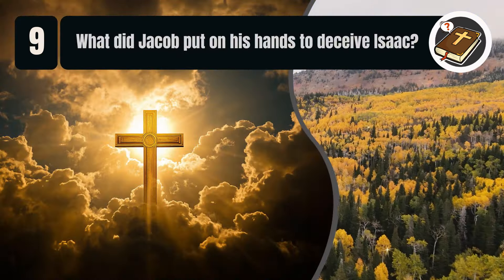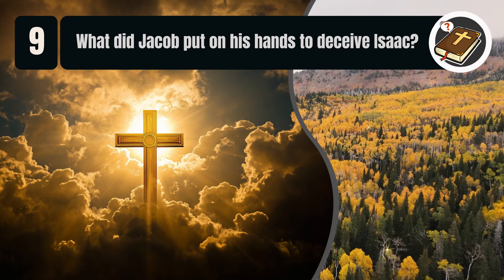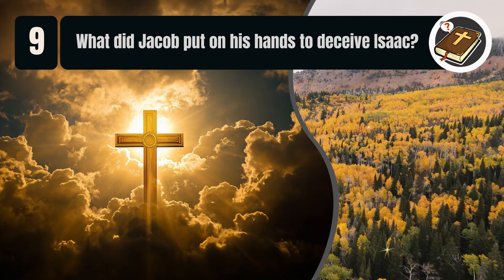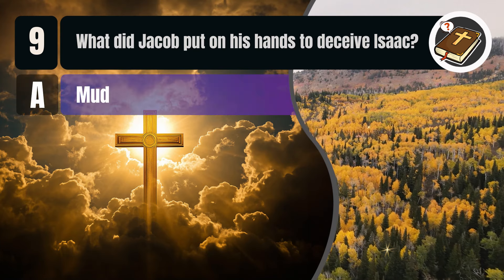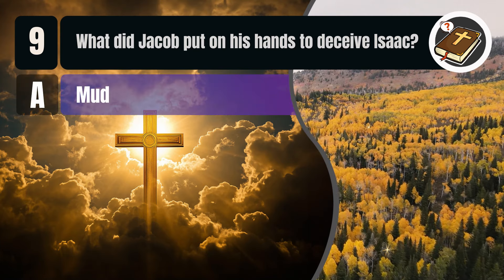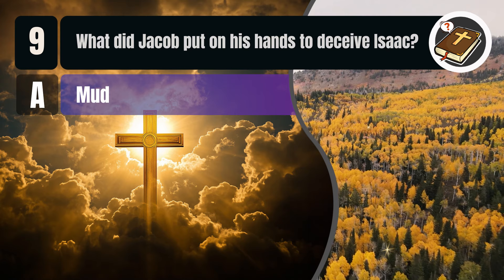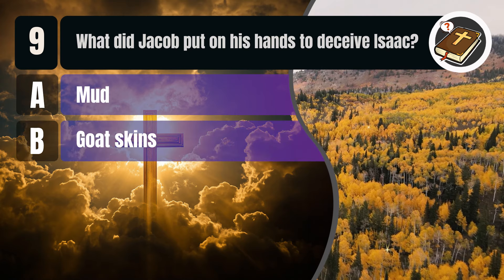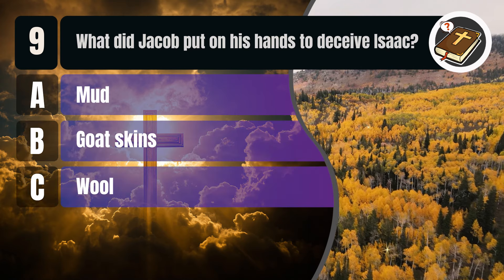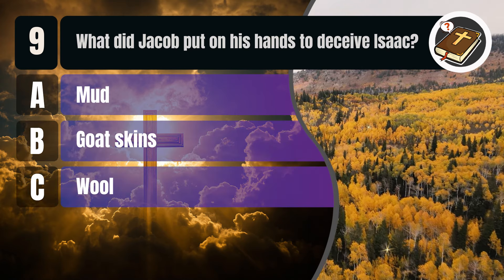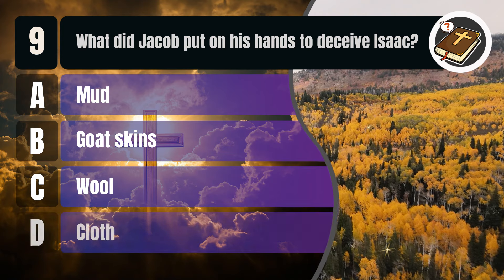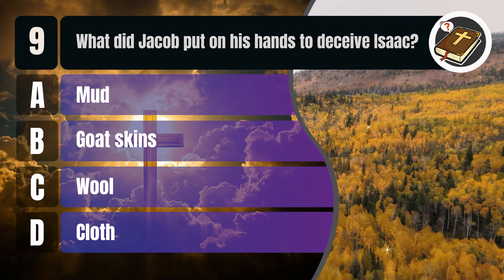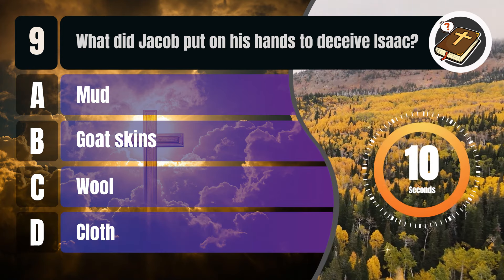Question 9. What did Jacob put on his hands to deceive Isaac? A. Mud. B. Goat skins. C. Wool. D. Cloth.